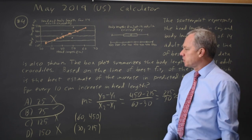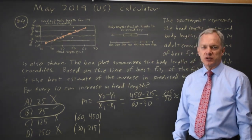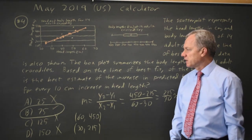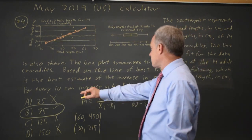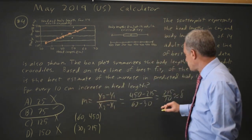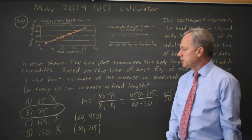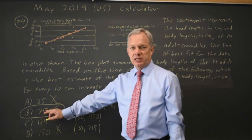And that's 8 centimeters of body length for each centimeter of head length. So for 10 centimeters of head length, you should get 10 times that, is about 80, and choice B is close to 80.